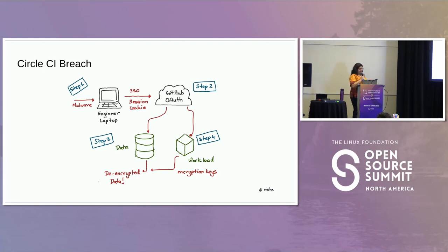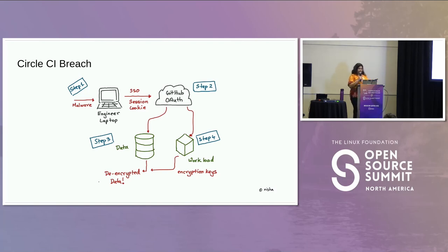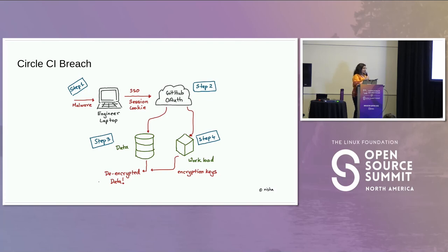Let's look at one that is even more interesting. Step one: malware is injected into the engineer's laptop; the attacker listens for packets and steals an SSO session cookie. Step two: the attacker uses the SSO session cookie to authenticate using GitHub's OAuth service. Step three: now authenticated as the engineer, they have permissions to exfiltrate data from the data store — but all the data is encrypted. Step four: the engineer actually has permissions to create production tokens, so the attacker spins up a workload, exfiltrates encryption keys, and uses those keys to decrypt the data. Sophisticated attack.